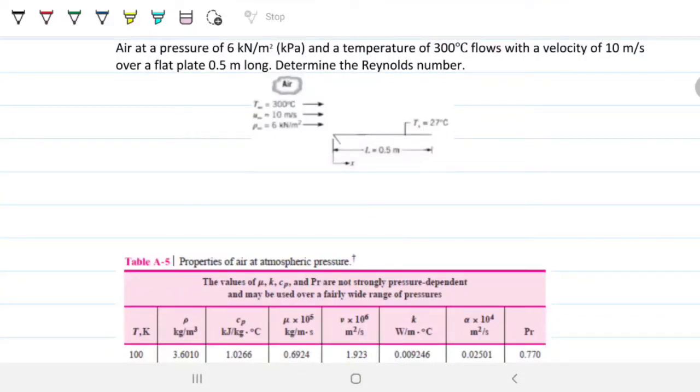Air at a pressure of 6 kilonewtons per meter squared, which is the same thing as a kilopascal, and temperature of 300 Celsius flows with a velocity of 10 meters per second over a flat plate 0.5 meters long. Determine the Reynolds number.